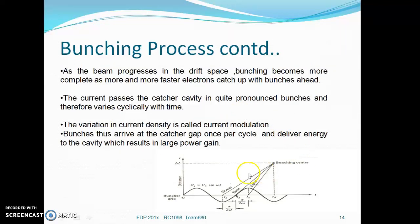As the beam progresses in the drift space, bunching may become more and more complete and faster electrons catch up with bunches ahead. The current passes the catcher cavity in quite pronounced bunches and therefore very cyclic. This variation in current density is known as current modulation. Bunches arrive at the catcher gap once per cycle and deliver energy to the cavity which results in large power gain or amplified output.